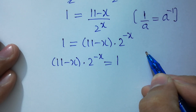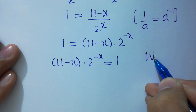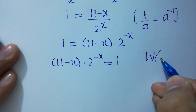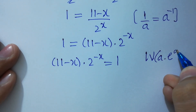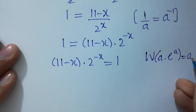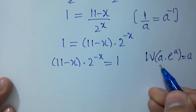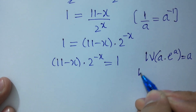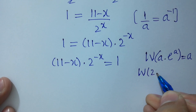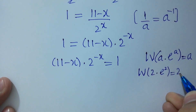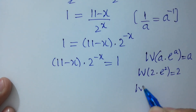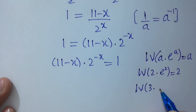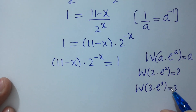I am going to apply the Lambert W function. This is very easy to understand. If we have the expression W(a times e to the power a), it will equal a. For example, W(2 times e to the power 2) equals 2, and W(3 times e to the power 3) equals 3. This is called the Lambert W function.